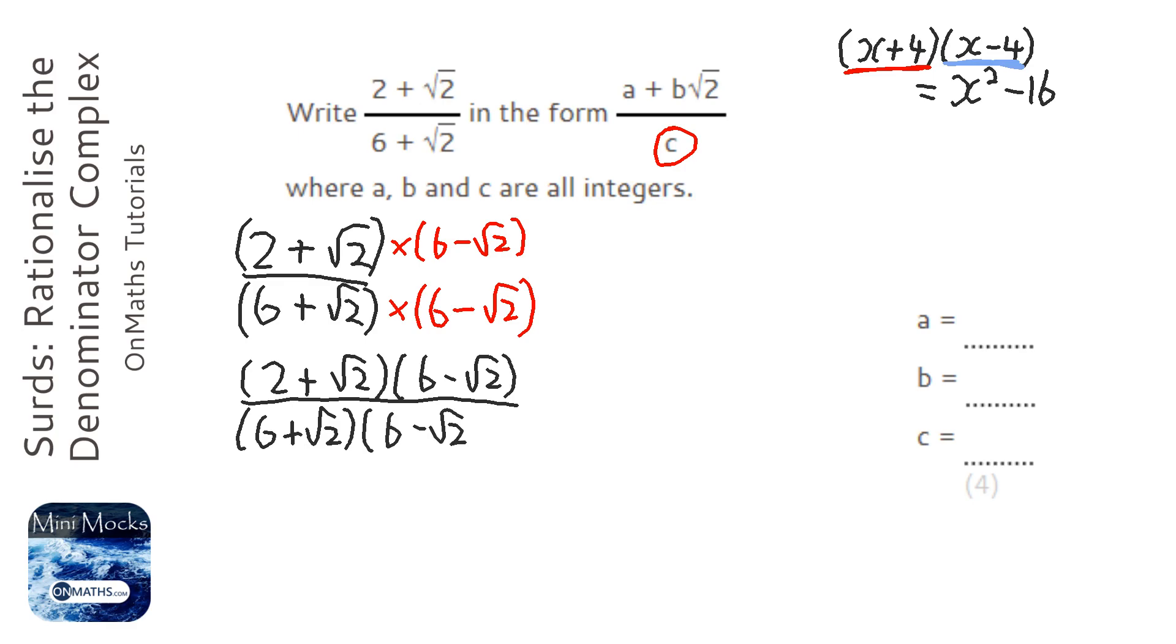Okay, so let's expand that. Now you can do this with FOIL or with grids or anything else. I'm going to try and attempt to do this in my head. So we've got 2 times 6 which is 12, we've got 6 root 2 take away 2 root 2, so that's going to be 4 root 2.